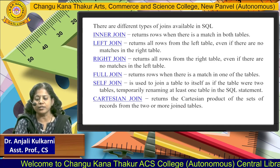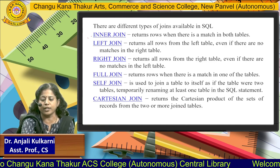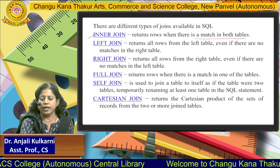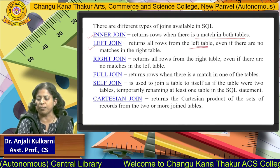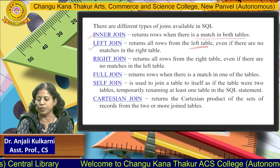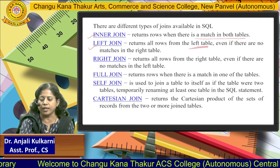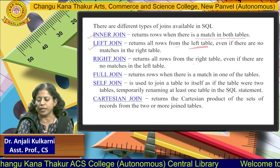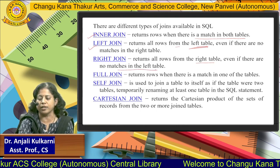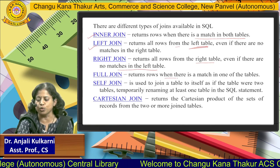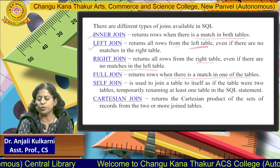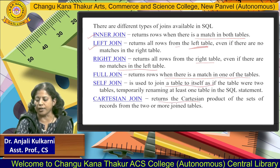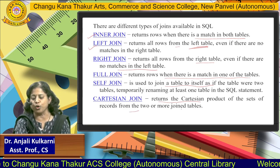There are different types of joins in SQL. Inner join returns rows when there is a match in both tables. Left join returns all rows from the left table even if there are no matches in the right table. Right join returns all rows from the right table even if there are no matches in the left table. Full join returns rows when there is a match in one of the tables. Self join joins a table to itself. Cartesian join returns the Cartesian product of records from two or more joined tables.